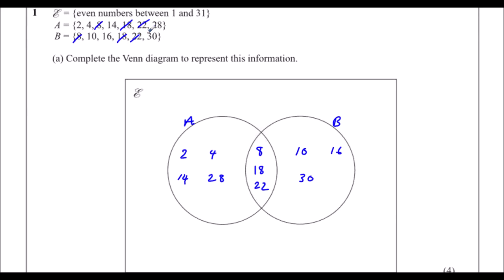We're supposed to have all the even numbers between 1 and 31. So anything not in A and not in B is going to go on the outside. We've got 2 and 4, we need 6, we've got 8 and 10, so we need 12, then 14, 16, 18, we need 20, we've got 22, we don't have 24, we don't have 26, and we've got 28 and 30. Counting them up: there are 15 even numbers between 1 and 31, so we know we've got all of them.